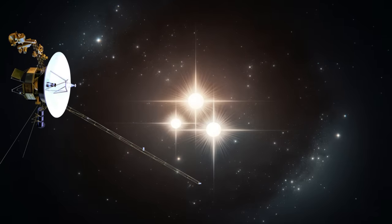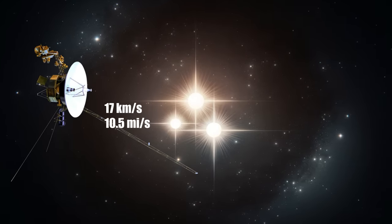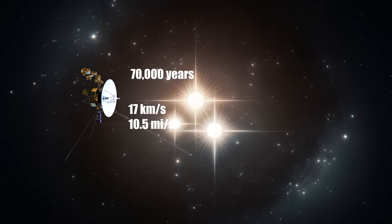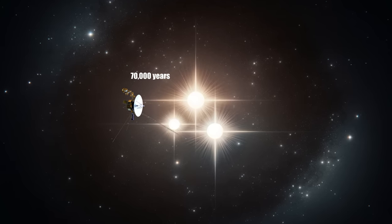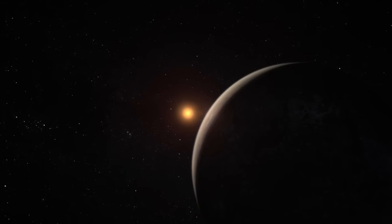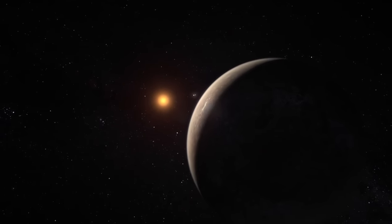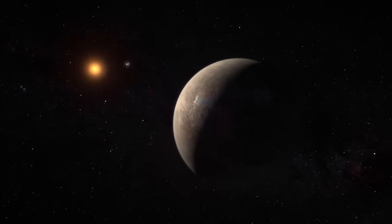For instance, the Voyager spacecraft, traveling at about 17 kilometers per second, would take over 70,000 years to reach this neighboring star system. This immense distance underscores the vastness of space that separates the stars and highlights the challenges of interstellar travel.